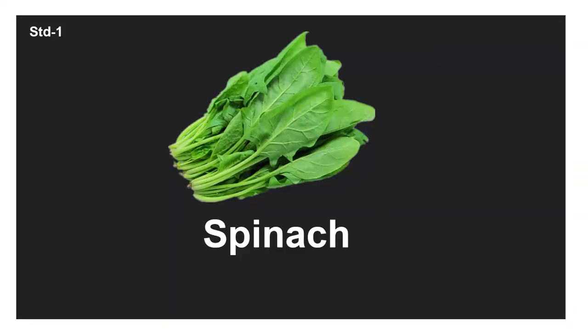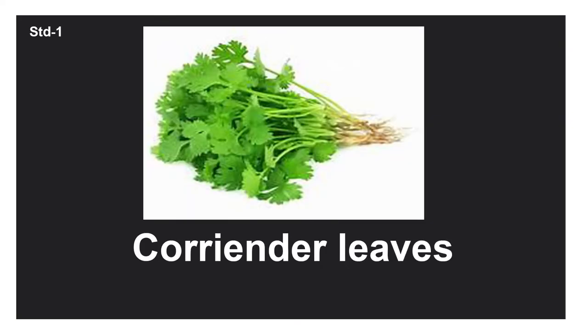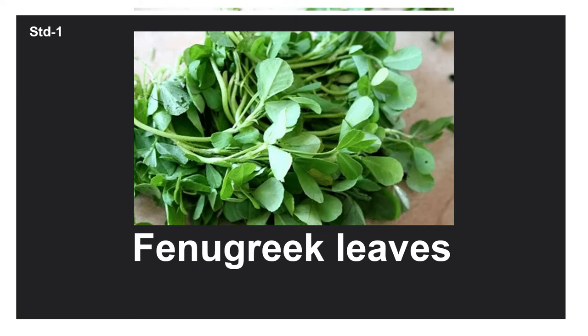Now some vegetables are like leaves — we eat that leaf. Have you eaten spinach — palak ki bhaji? See how palak looks — it is leaves. Now see coriander leaves. Your mummy sometimes makes food and then she garnishes it with coriander leaves — that is also a leaf we are eating. Fenugreek — methi ki bhaji — is also a leafy vegetable. These are called leafy vegetables because we eat the leaf.